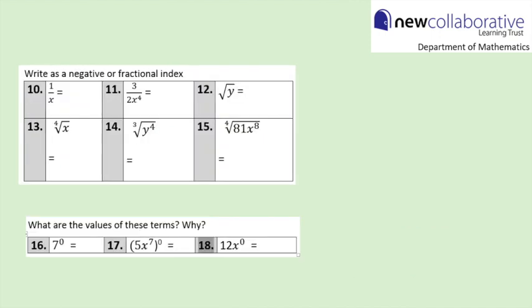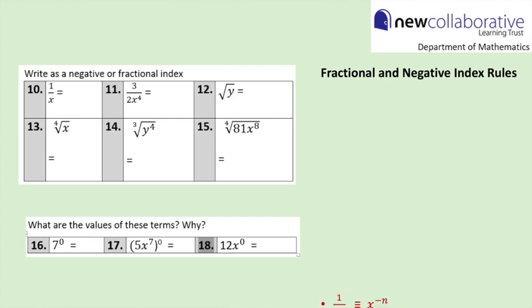An essential skill at A-level is to write an expression — which may be an algebraic fraction or involve roots — using index form. We have the basic rules: 1 over x to the power of n is equivalent to x to the power of negative n; and the nth root of x to the power m is equivalent to x to the power of m over n. Look at the 6 questions at the top and rewrite those expressions using indices, using negative or fractional indices as needed. For the 3 questions at the bottom, work out the values of those terms.